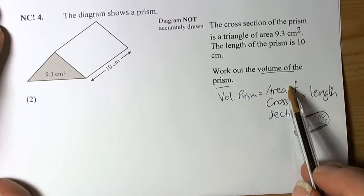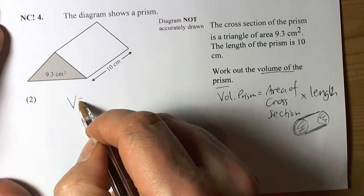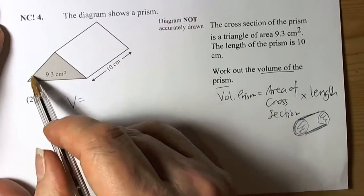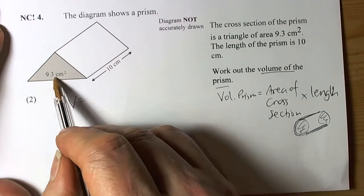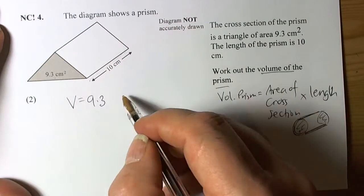So the volume of the prism equals area of cross section times the length. When we look at this particular question, we can see that the area of the cross section has been given as a triangle. They've told us that the answer is 9.3 for the area and the length of the shape is 10.